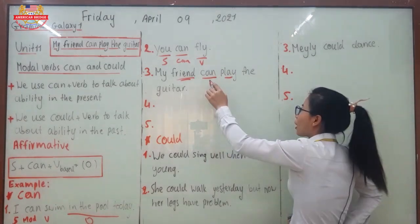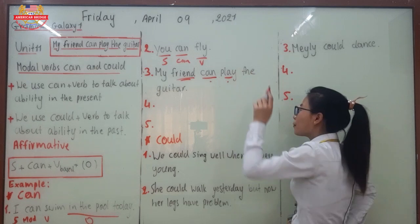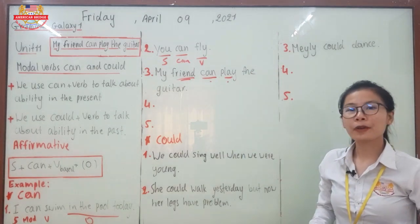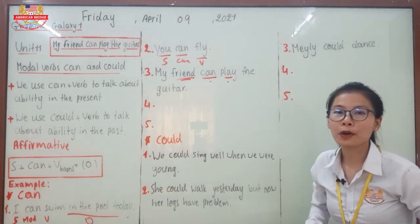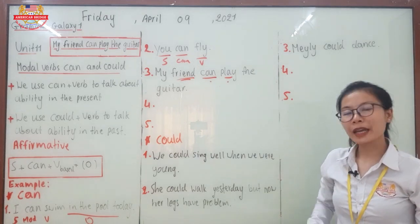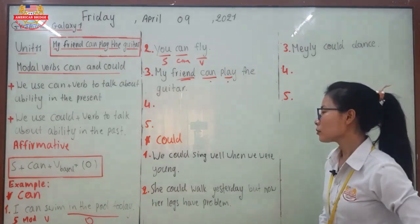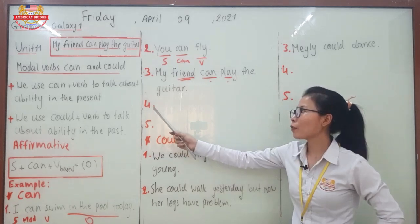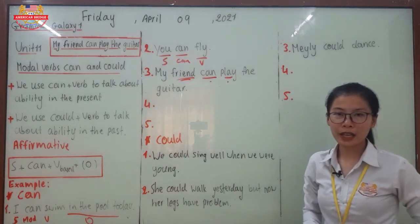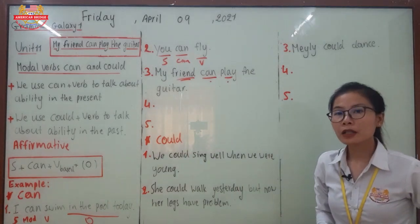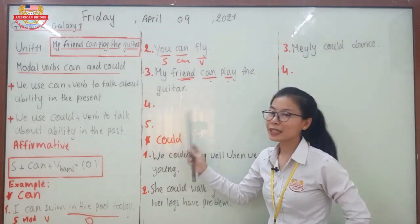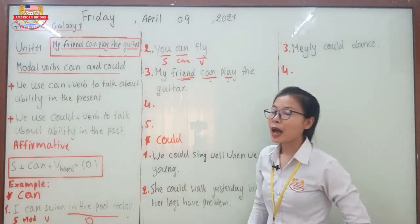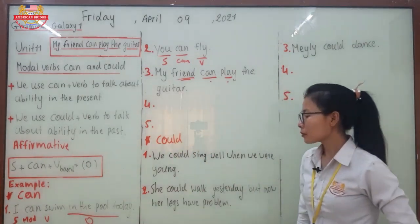Modal verbs cannot take -s, and the verb after a modal verb also does not take -s. This is the rule for using modal verbs. For numbers four and five, I'd like you to create two more sentences using 'can' on your own.